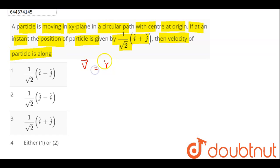Here we can say, we know velocity vector is given as r cross omega vector. Now, since the particle is moving in x-y plane, hence the angular velocity can be either in plus z direction or minus z direction.